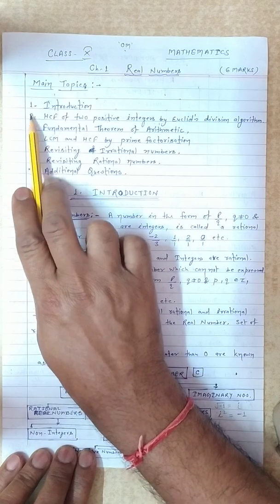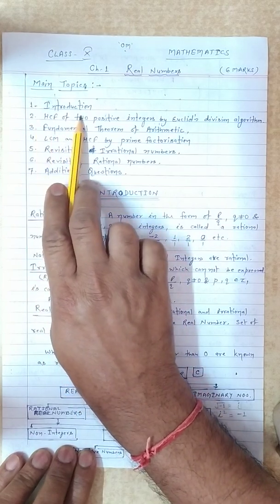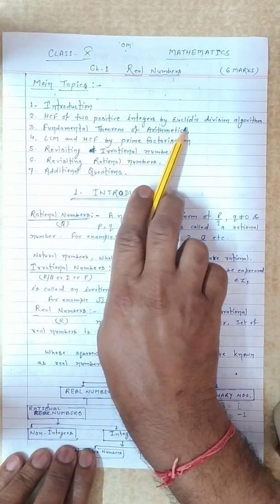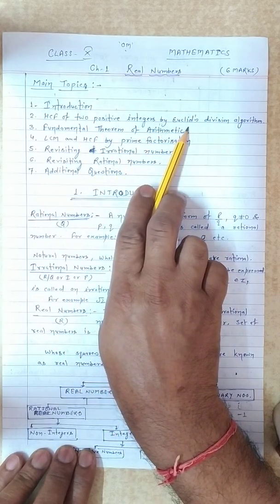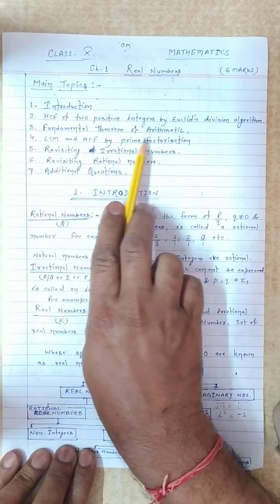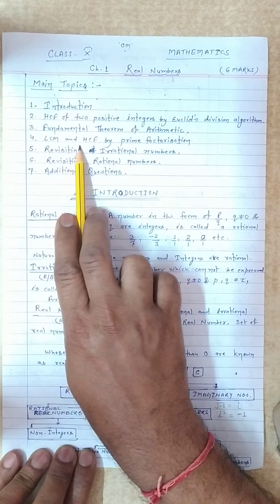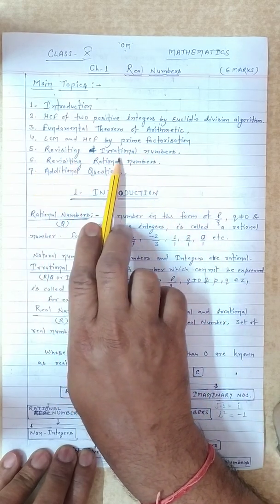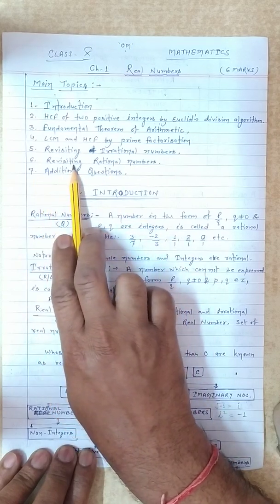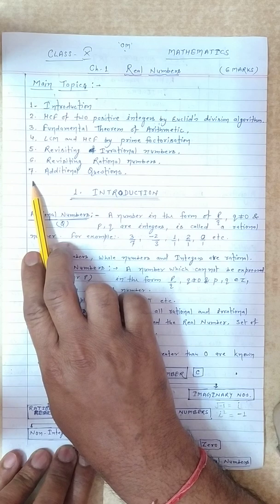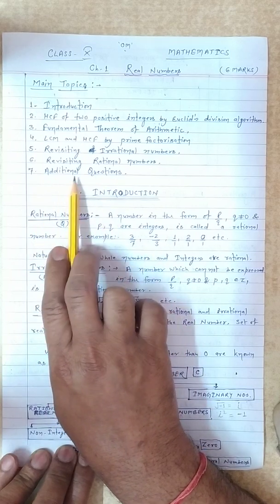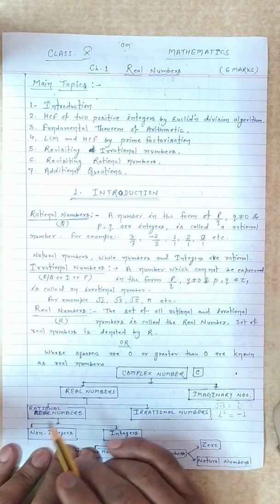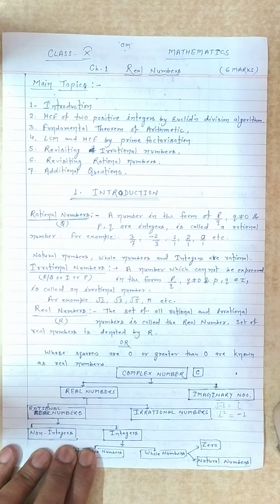The main topics are: first, introduction; second, HCF of 2 positive integers by Euclid's division algorithm; third, fundamental theorem of arithmetic; fourth, LCM and HCF by prime factorization; fifth, revisiting irrational numbers; sixth, revisiting rational numbers; and additional questions, NCERT knowledge, and extra questions.